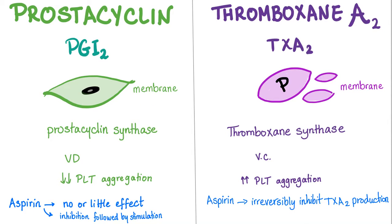Arachidonic acid comes from the phospholipid membrane through the enzyme phospholipase A2. Who makes the prostacyclin? The enzyme prostacyclin synthase — synthesis of prostacyclin. Who makes thromboxane A2? Thromboxane synthase.